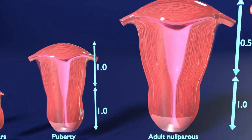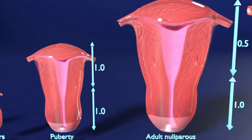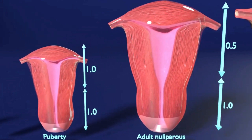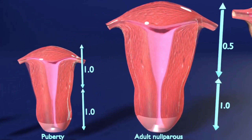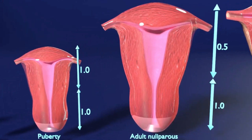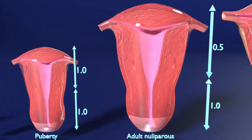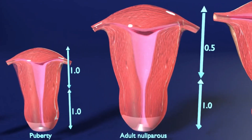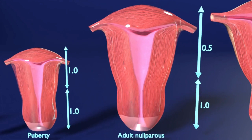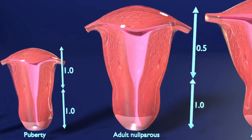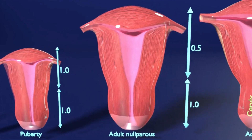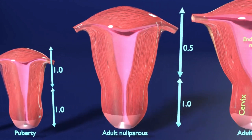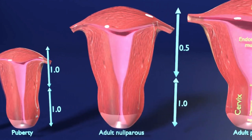In this view, the adult nulliparous uterus can be seen, in which no previous pregnancy has occurred. It can be smaller than a multiparous uterus, in which multiple pregnancies have occurred. In the adult uterus, the body is bigger than the cervix and the fundus-to-cervix ratio is 2:1.